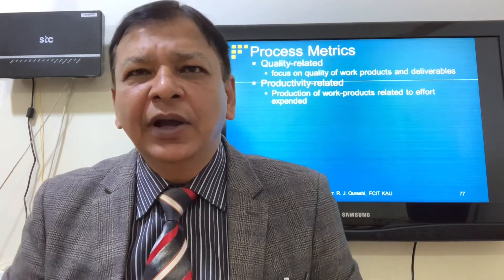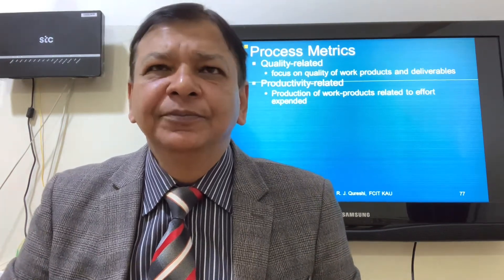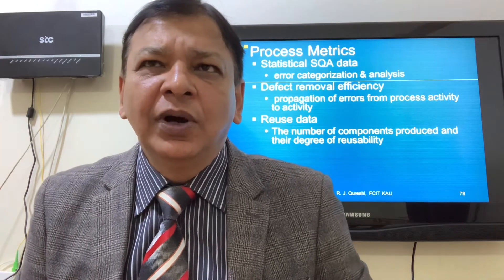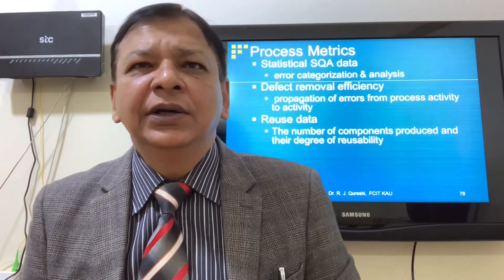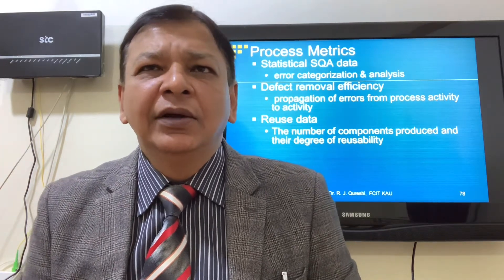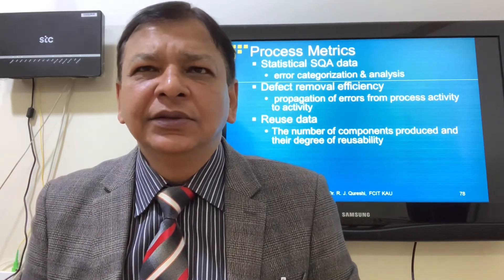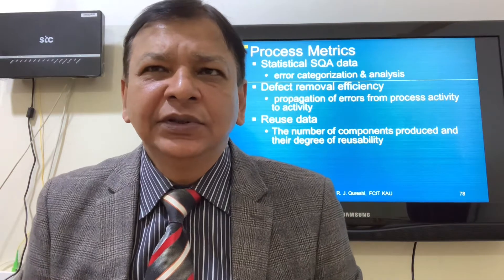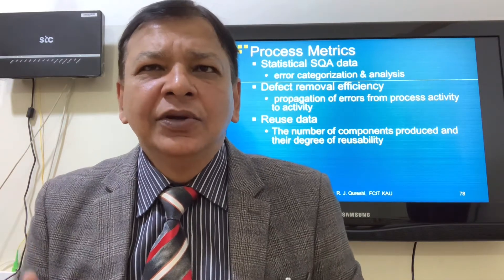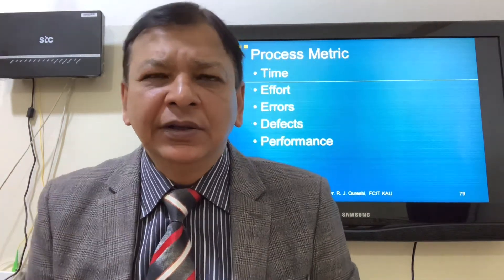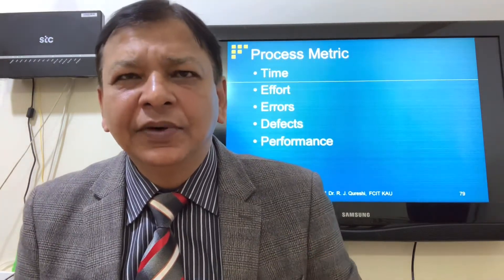Process metrics are of two types: quality-related and productivity-related. Quality-related metrics focus on quality of work products and deliverables. Productivity-related metrics focus on production of work products relative to effort expended. Process matrix components include statistical analysis, software quality metrics, data on error categorization, analysis, defect removal efficiency, and reuse data. Process metrics are measured in terms of time and effort.